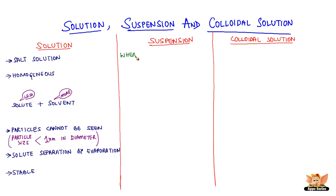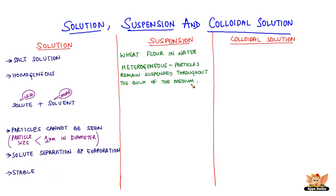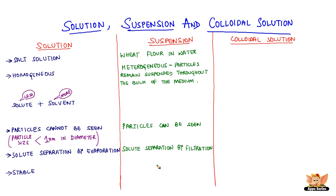Wheat flour mixed with water is an example of a suspension. A suspension is a heterogeneous mixture in which the solute particles do not dissolve but remain suspended throughout the bulk of the medium. The solute particles in a suspension are clearly visible. These particles can be separated by the filtration process. When a suspension is left undisturbed and the solute particles settle down, the suspension is said to be unstable.